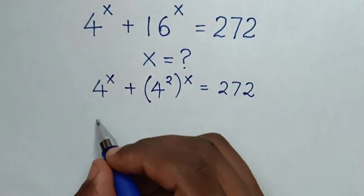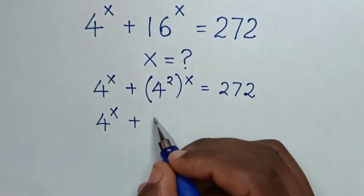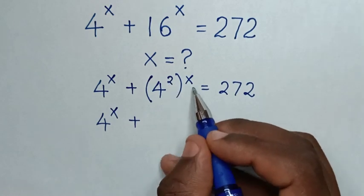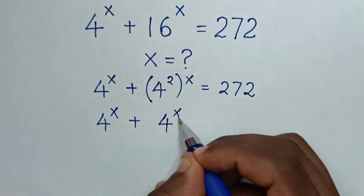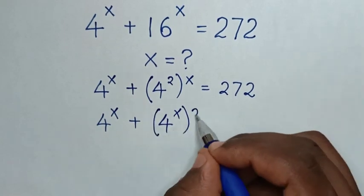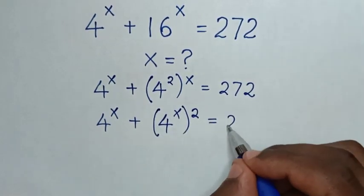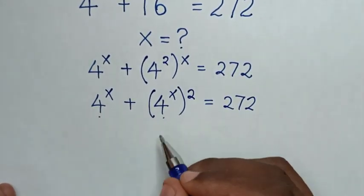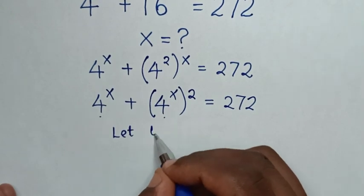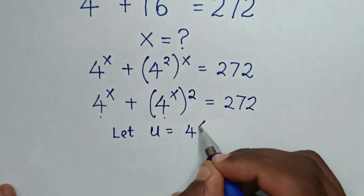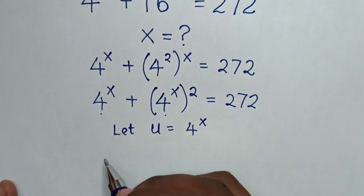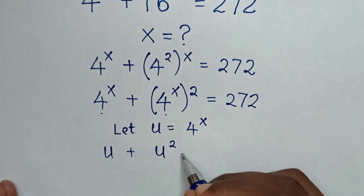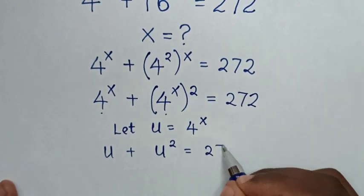We exchange the powers: x goes inside the bracket and 2 goes outside, so 16 power x becomes 4 power x, bracket, power of 2. Our equation is now 4 power x plus 4 power x squared equals 272. Since 4 power x is common, we let u equal to 4 power x, giving us u plus u squared equals 272.